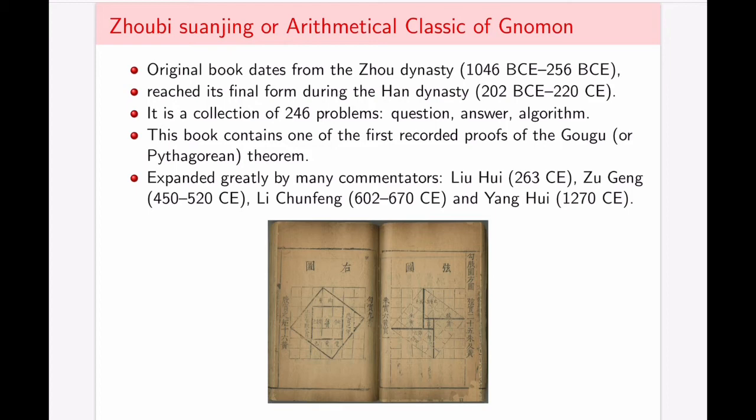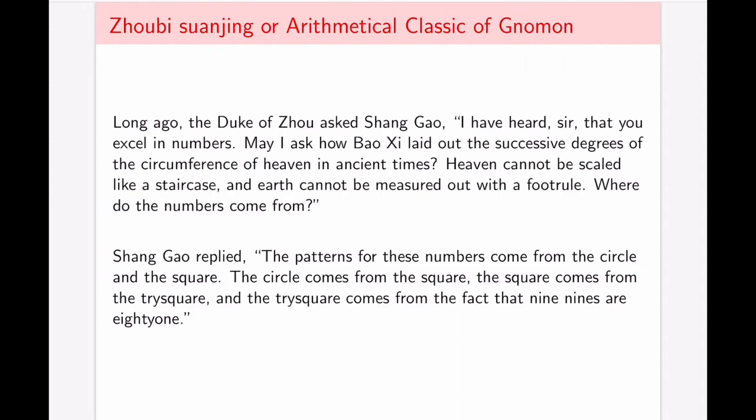The arithmetical classic of Gnomon is written in the shape of a dialogue between the duke of Zhou and Shang Gao, his astronomer. And you can read through some of the made-up conversations they've had just to see some of the interplay within the text. The reply that Shang Gao provides to the question, where do numbers come from, is also indicative of the Chinese approach, the ancient Chinese approach to mathematics.